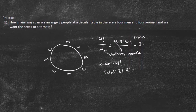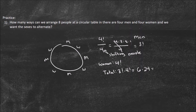Three factorial is 6, times four factorial is 24. Six times 24 equals 144. So there are 144 ways to organize the people at this table.